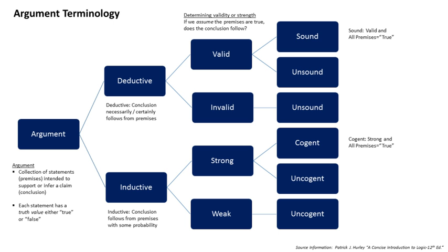Non-deductive logic is reasoning using arguments in which the premises support the conclusion but do not entail it. Forms of non-deductive logic include the statistical syllogism, which argues from generalizations true for the most part, and induction, a form of reasoning that makes generalizations based on individual instances. An inductive argument is said to be cogent if and only if the truth of the argument's premises would render the truth of the conclusion probable — i.e., the argument is strong — and the argument's premises are, in fact, true. Cogency can be considered inductive logic's analog to deductive logic's soundness. Despite its name, mathematical induction is not a form of inductive reasoning. The lack of deductive validity is known as the problem of induction.